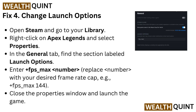Fix 4: Change launch options. Open Steam and go to your library, right-click on Apex Legends and select Properties. In the General tab, find the section labeled Launch Options. Enter '+fps_max [number]', replacing 'number' with your desired frame rate cap — for example, '+fps_max 144'. Close the properties window and launch the game.